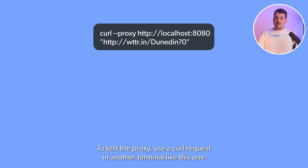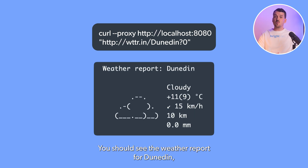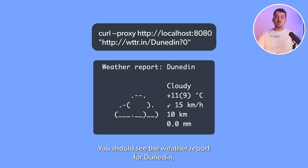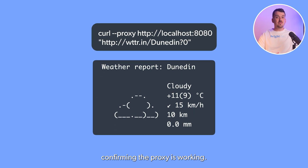To test the proxy, use a curl request in another terminal like this one. You should see the weather report for Doondin, confirming the proxy is working.